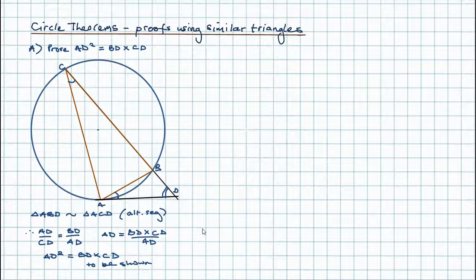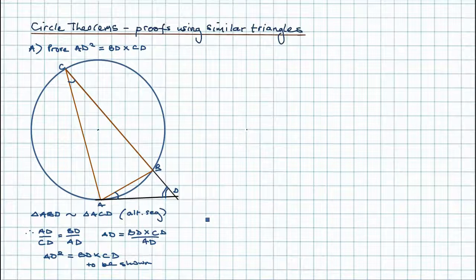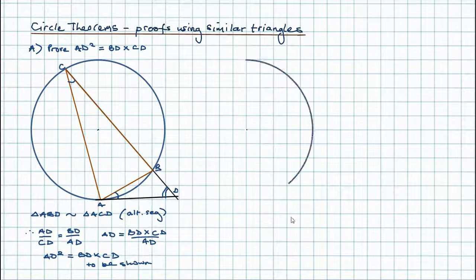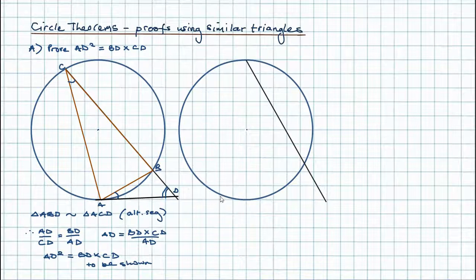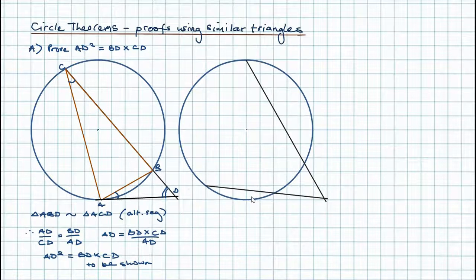Those are the essential three steps for proving these theorems, and the first theorem we proved is the tangent-secant theorem. Let's now move on to the secant-secant theorem. We draw one secant down and another secant going across, and we can see they intersect outside the circle.